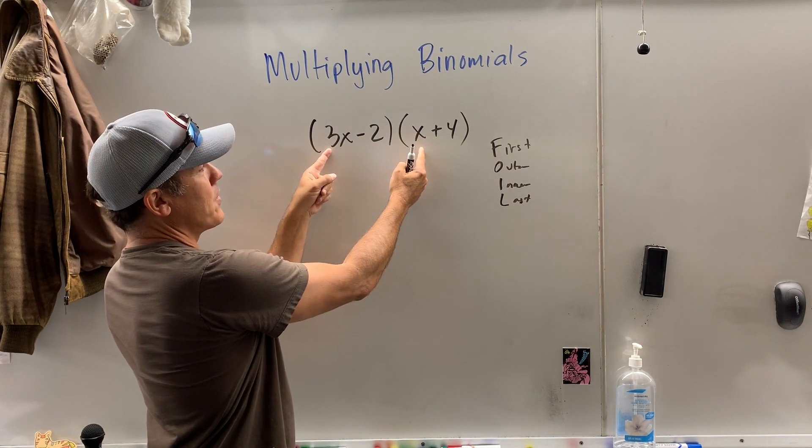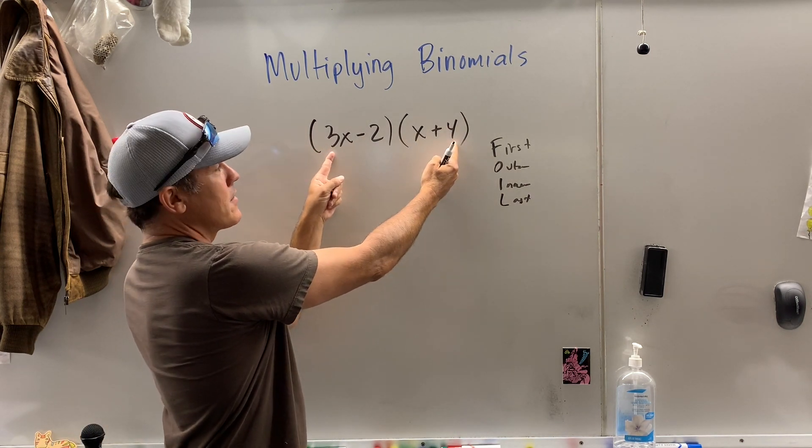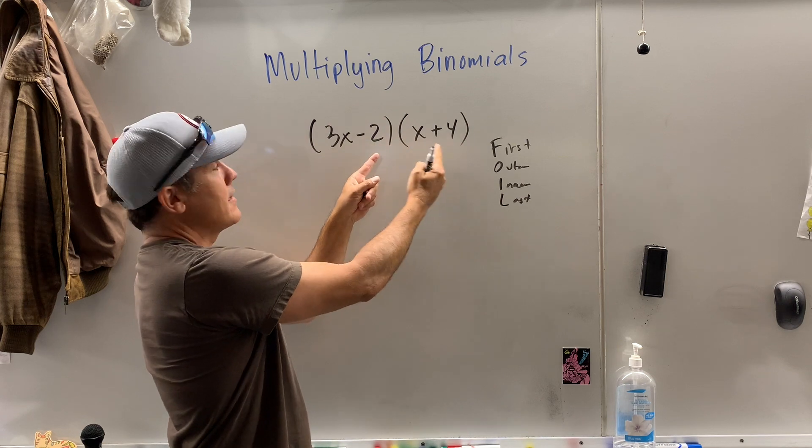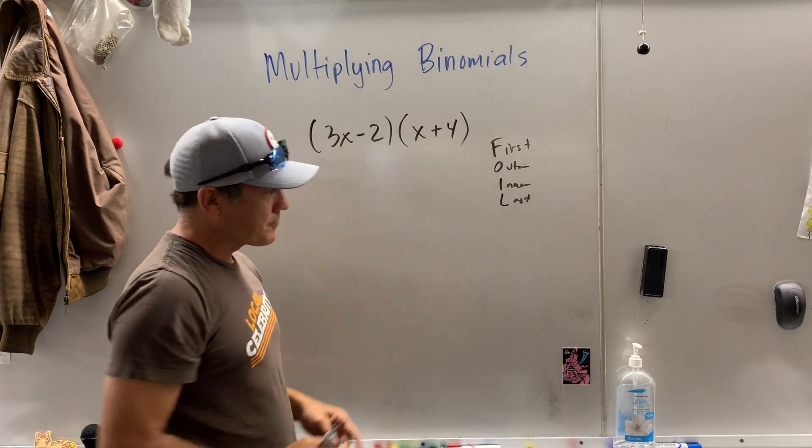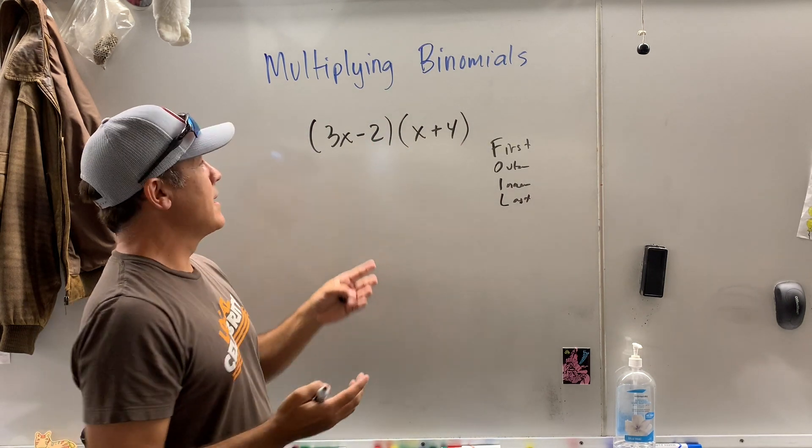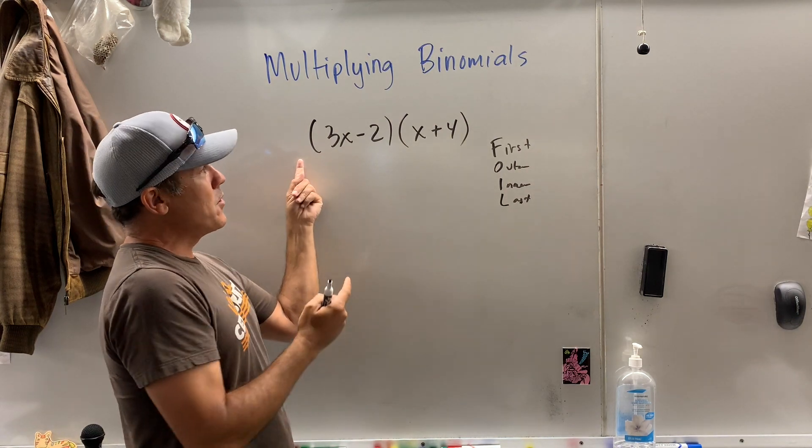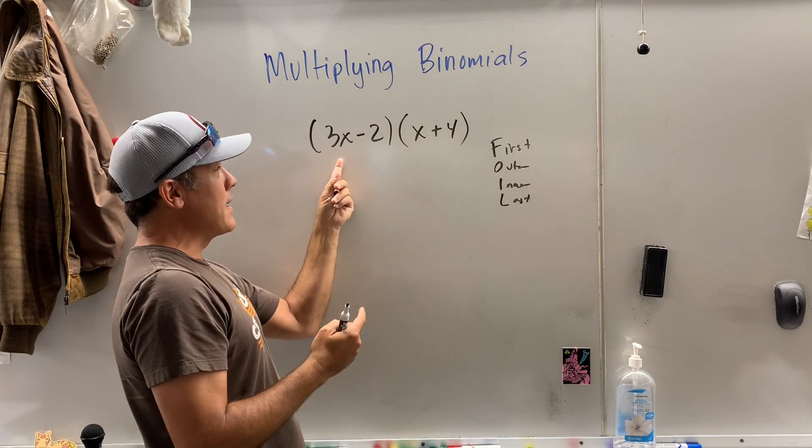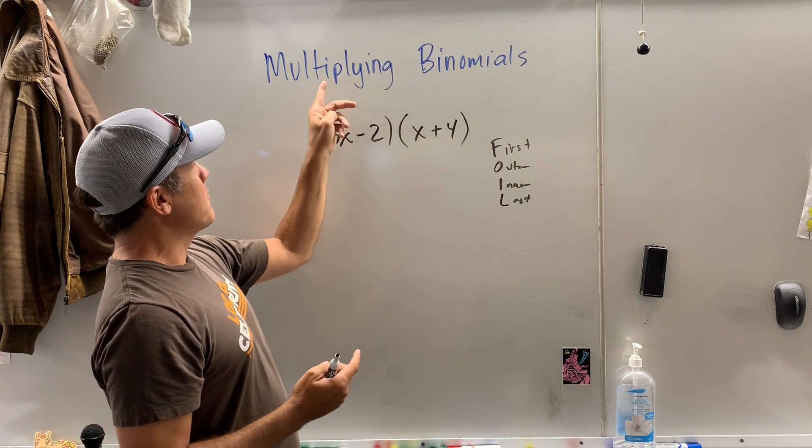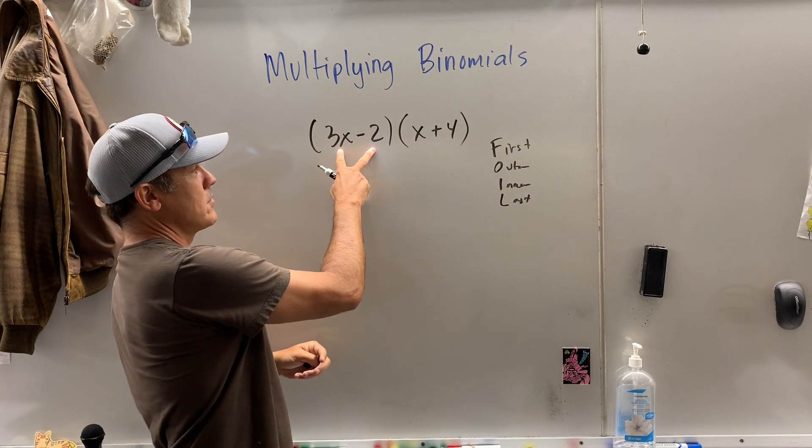Because you're going to multiply the first, then you're going to multiply the outer, then you're going to multiply the inner, and then you're going to multiply the last terms. For me that falls apart if you're doing a monomial times a binomial or a binomial times a trinomial. See we're multiplying binomials, what does that mean? Two terms, two terms.